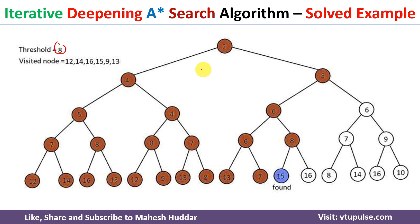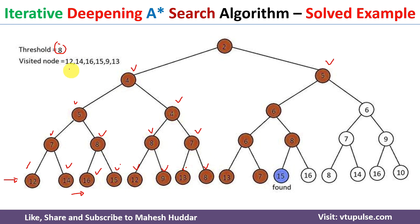With threshold = 8, we start exploring again. From the root (f-score 2, not greater than 8) we get children 4 and 5. From the child with f-score 4 we get 5 and 4. From 5 we get 7 and 8; from 7 we get 12 and 14 — both pruned. From 8 we get 16 and 15 — both pruned. From the 4 node we explore further but none are the goal node and all exceed threshold. From the right-side child with f-score 5 we get 6 and 6. From one 6 we get 6 and 8; from that 8 we get 15 and 16. The node with f-score 15 is the goal node — we have reached the goal node and we stop.